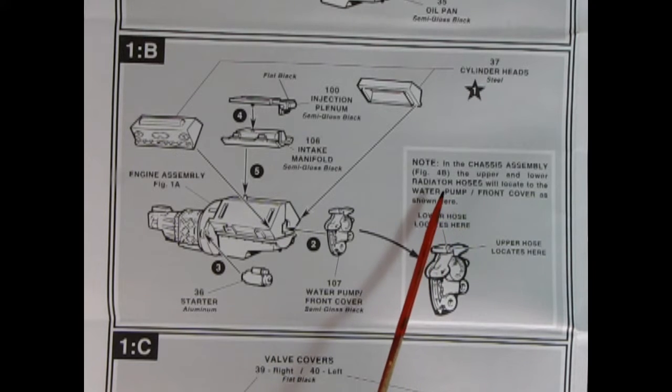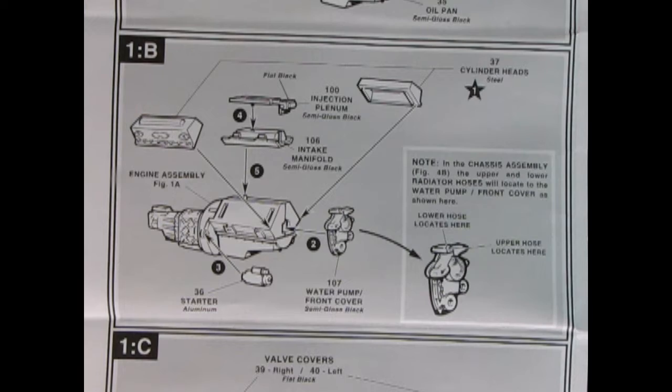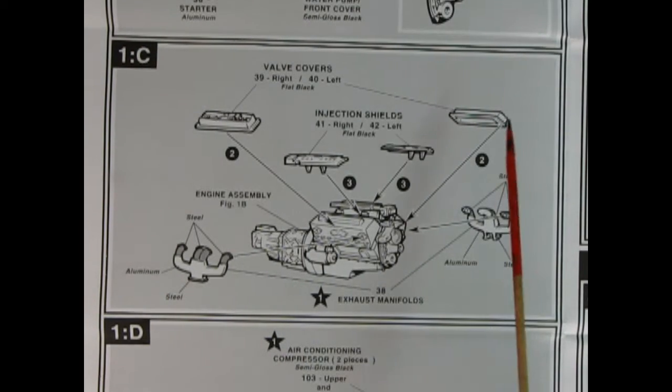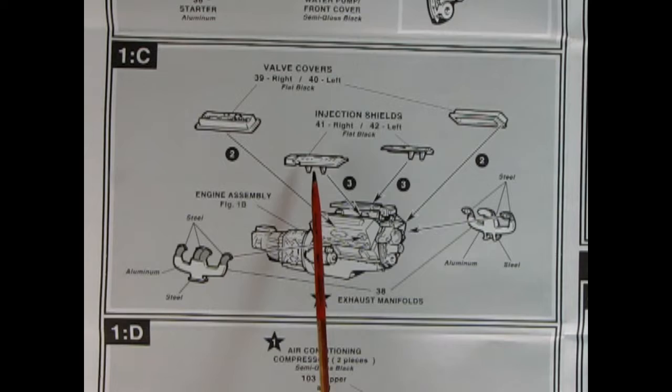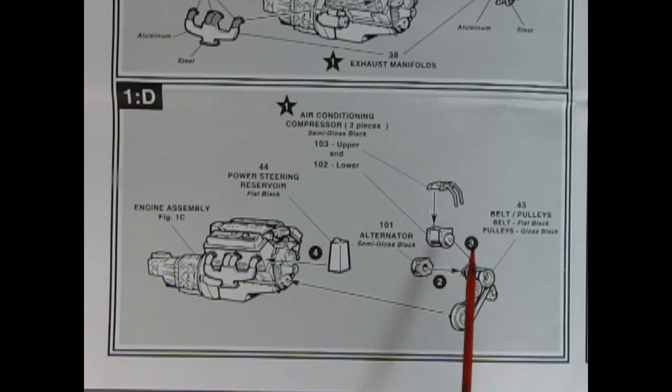Moving right along, we can now glue our cylinder heads onto the engine block. We've got our intake manifold and we've also got our injection plenum. Then here we've got our water pump and front cover and the starter motor. In the chassis assembly, the upper and lower radiator hoses will locate at the water pump front cover. In panel 1C here, you can add on your nice valve covers, your injector shields, and then the left and right exhaust manifolds. In panel 1D, we have our air conditioning compressor unit going together and our belts and pulleys, the alternator and the power steering reservoir. All this will glue onto the front of that engine.